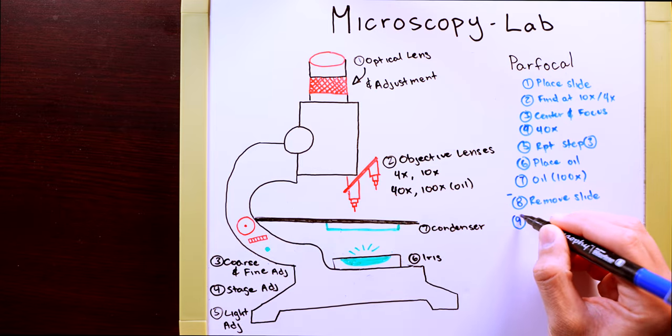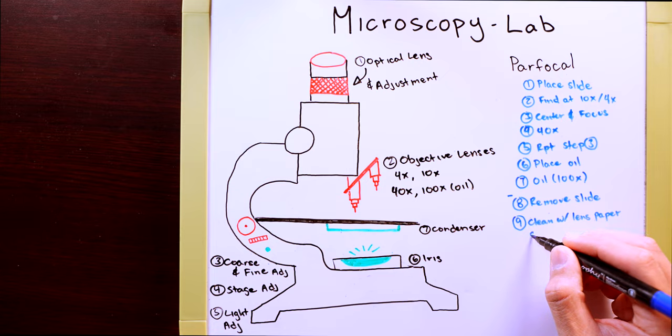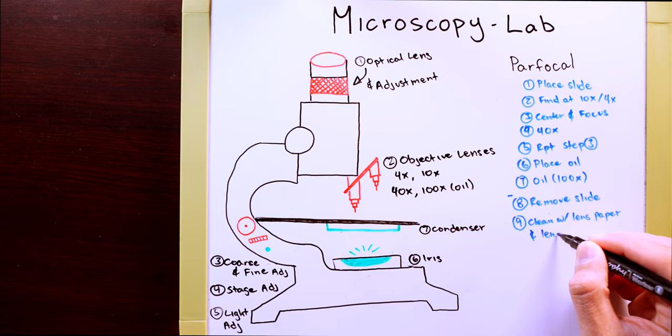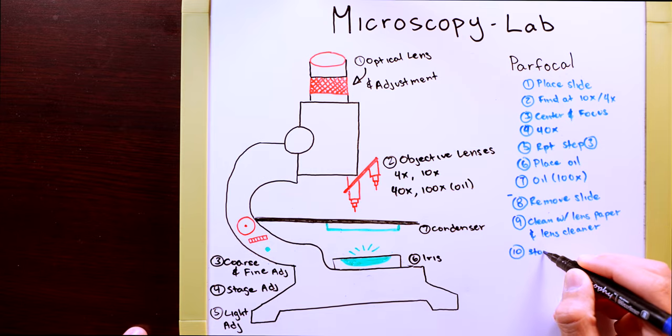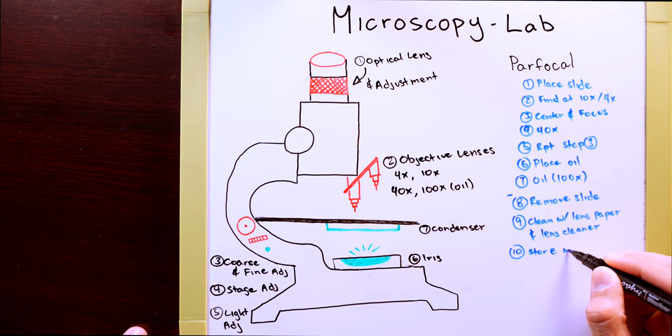And that is with a piece of lens paper and lens cleaner. If you don't have any lens cleaner, ask your lab professor if it's okay to use alcohol and then properly store the microscope away.